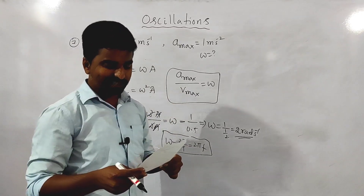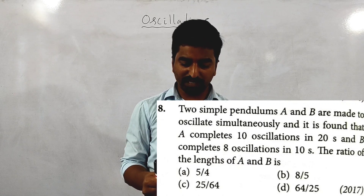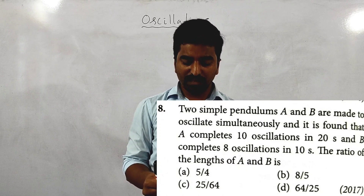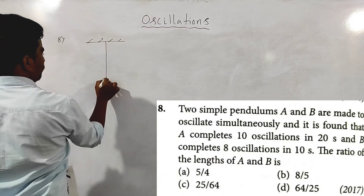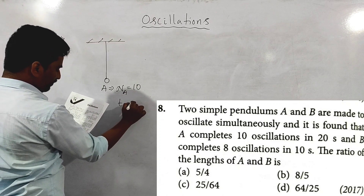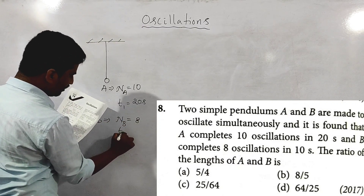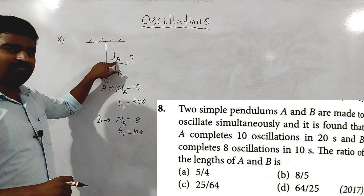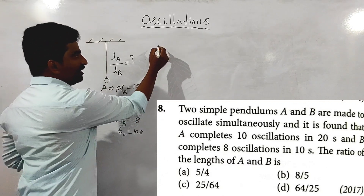Next question: two simple pendulums A and B oscillate simultaneously. Pendulum A completes 10 oscillations in 20 seconds and B completes 8 oscillations in 10 seconds. The ratio of lengths of A to B is required. We need the effective length of A to the effective length of B.